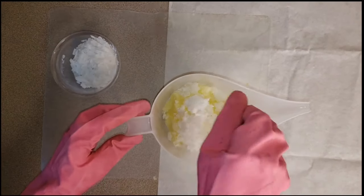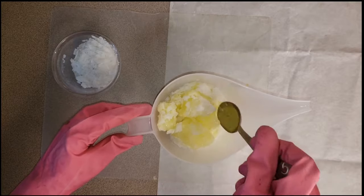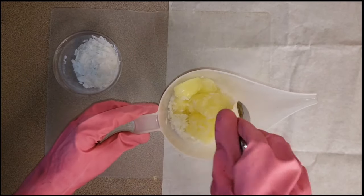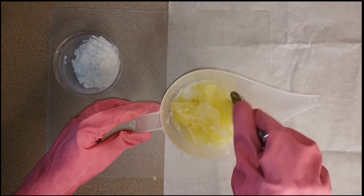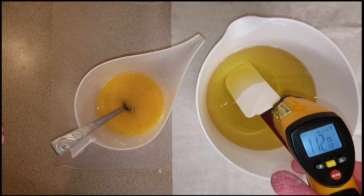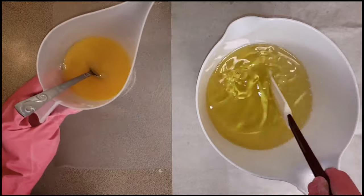Start by adding your lye, sodium hydroxide, a little at a time into your frozen pineapple juice. I already pre-made my pineapple juice and froze it in the freezer. Once it's all melted, check the temperature. I am soaping at a very low degree, below 100 for my lye.